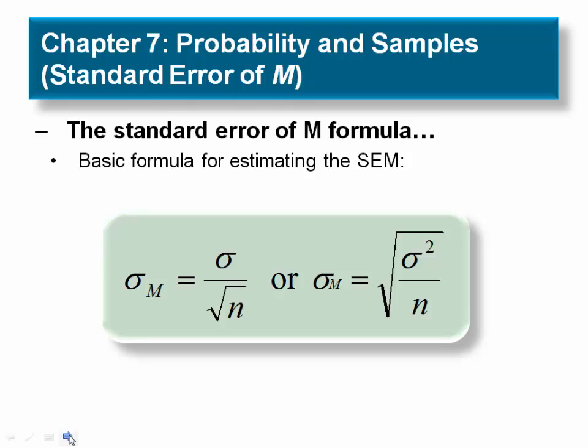Remember in Chapter 4, you learned that the standard deviation is the square root of the variance. So the formula on the left uses the standard deviation where the square root of the variance has already been accomplished.